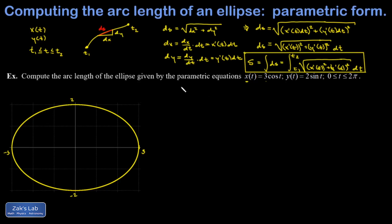And it's simple enough to apply our new formula. I just have to compute x prime of t, which is negative 3 sine t. Compute y prime of t, which is 2 cosine t. Then I plug into my arc length formula. And I'll clean it up a little bit.